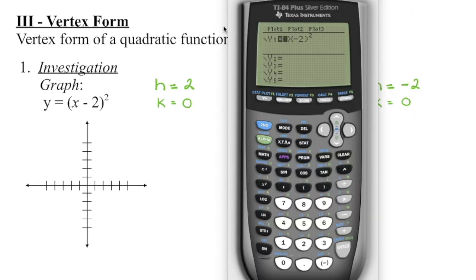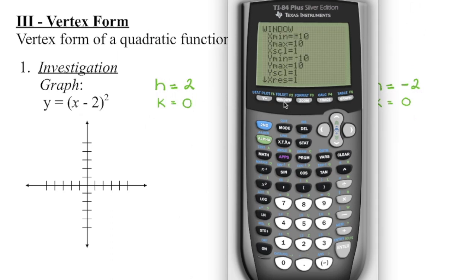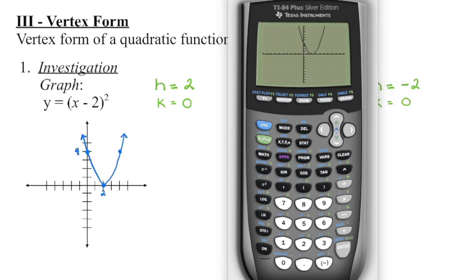Now we could make a table of values and substitute values in for x, or we can go ahead and graph this on our calculator. When we put this in, remember it's going to be bracket x, then minus, then 2, close the bracket, and press the squared button. My window is the default settings — negative 10 to positive 10 on both axes with a scale of 1. We can use the calculator to get key points such as the y-intercept and the vertex. Because this form is called vertex form, we pay particular attention to the vertex, which in this case is at 2, 0.